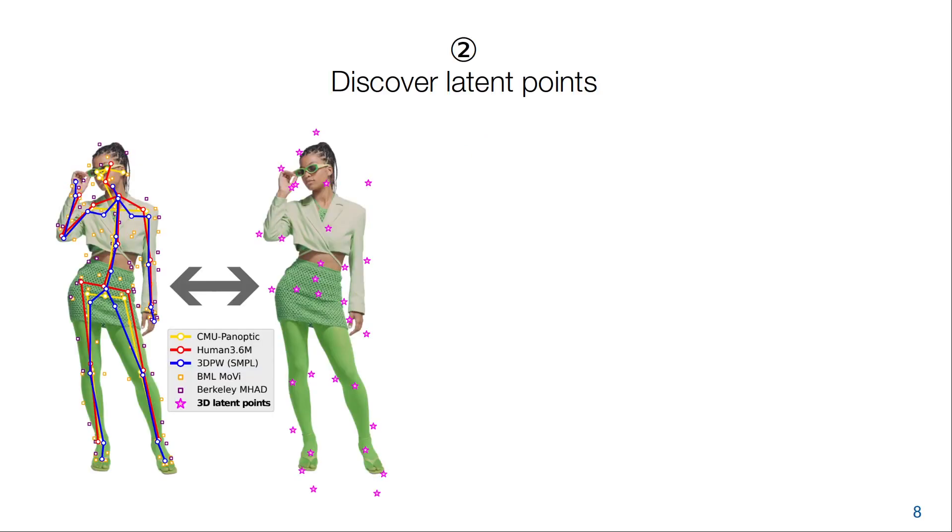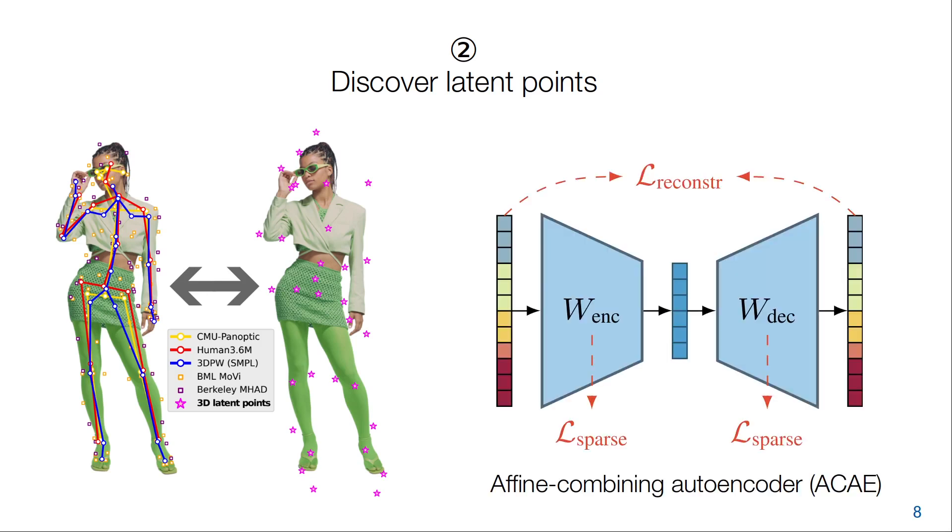In the second step, we perform dimensionality reduction on the number of key points in the pseudo ground truth. In other words, we want to discover a set of latent key points underlying all of these formats. For this, we propose a novel linear autoencoder formulation, the affine combining autoencoder.